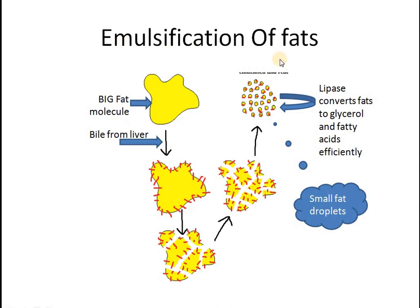This is emulsification of fats. It means that you convert a large fat molecule into smaller molecules. In your body, whenever there is a big fat molecule, it is acted upon by bile from the liver. The liver is an organ which produces a green alkaline fluid called bile. Bile breaks down this large molecule of fat into smaller pieces. When you decrease the size of the molecule, you are actually increasing the surface area to volume ratio.